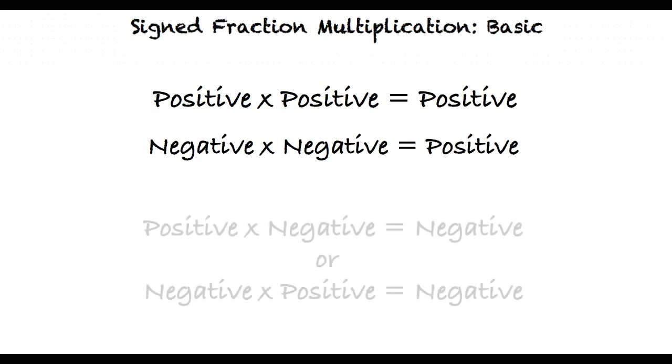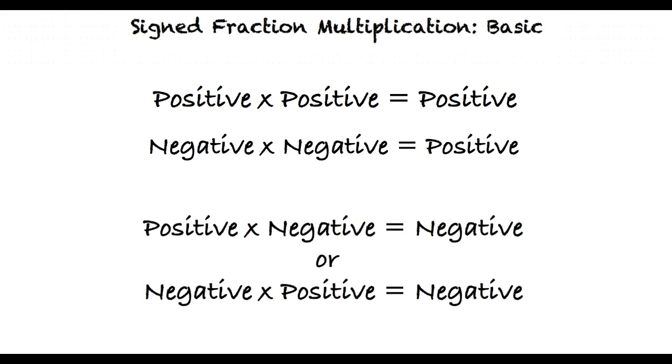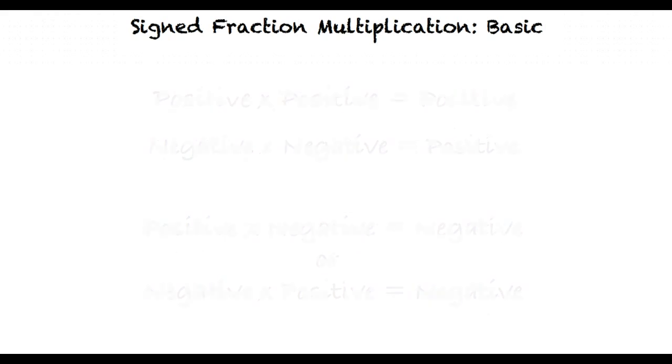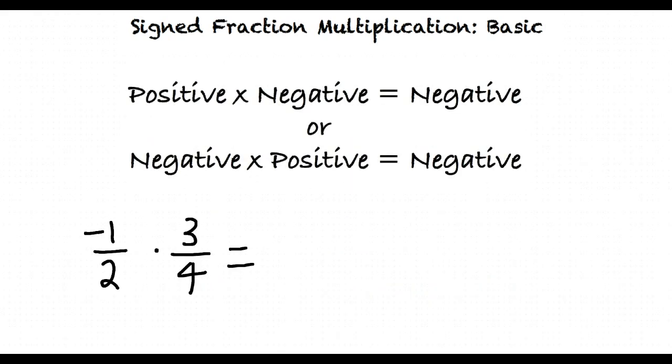However, if only one of the numbers is negative, then the answer is negative. For example, if we multiply negative 1 half times 3 fourths, the answer will be negative because only one of the numbers being multiplied is negative. This results in negative 3 eighths.